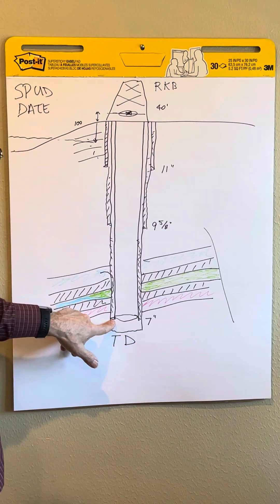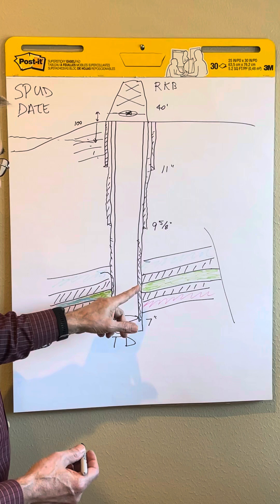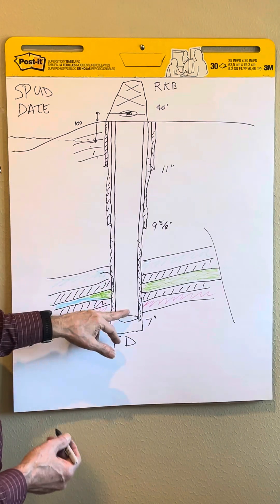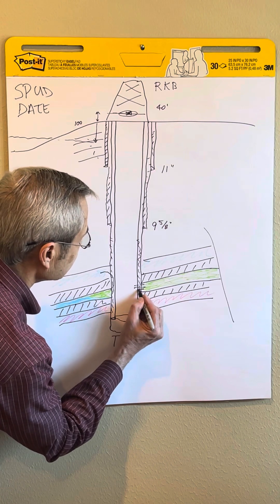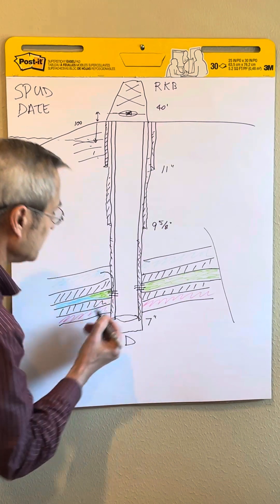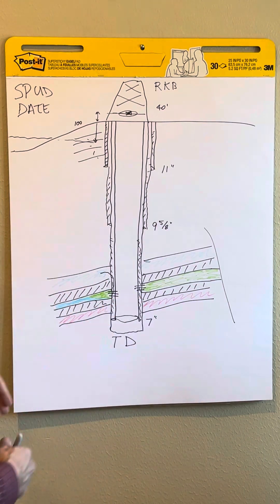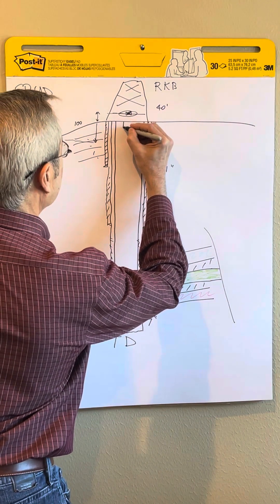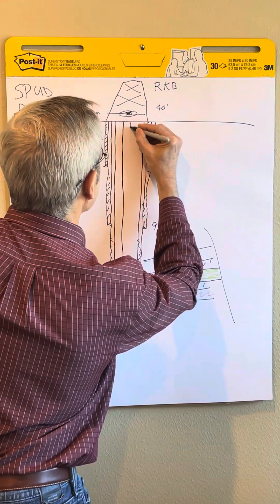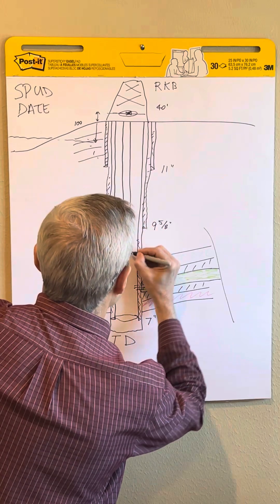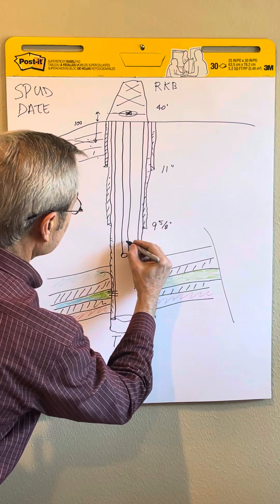We've logged it, we've cased it, we've got the production casing down. So we want to finish completing the well. We decide we want to produce the oil. We're going to shoot holes through the cement and the casing with a big explosive gun. That's going to let the oil come in the well. The next thing we do is run the production tubing, a smaller diameter pipe that might be like a 2 7/8 inch pipe.